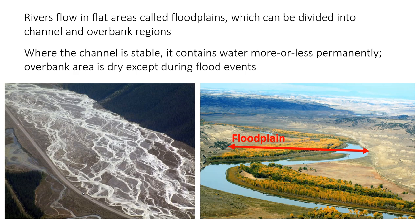These two photos also illustrate the two main categories of rivers: braided rivers, shown in the photo on the left, and meandering rivers, shown in the photo on the right. We'll spend a few slides talking about what they look like and how they work.